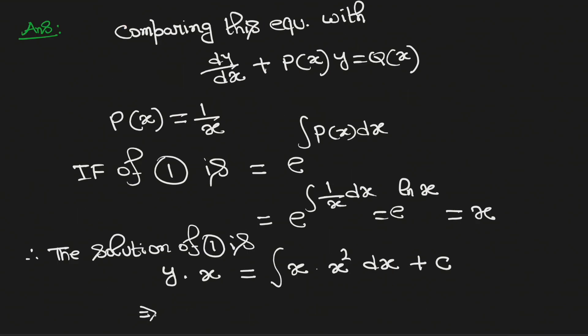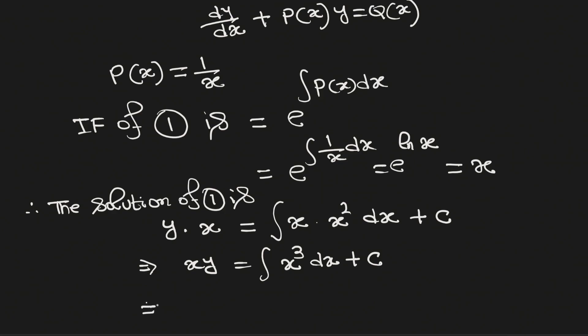Simplifying we get xy is equal to integration of x cubed dx plus integration constant c, which is again same as xy equals x to the power 4 divided by 4 plus integration constant c. And this is the solution of the given differential equation. And this is our final answer.